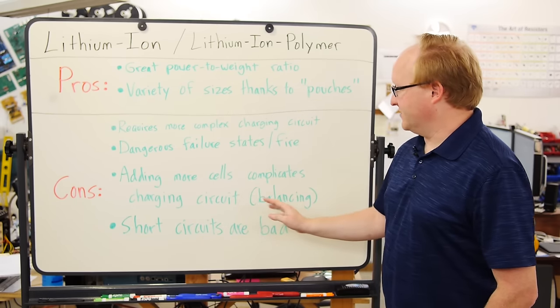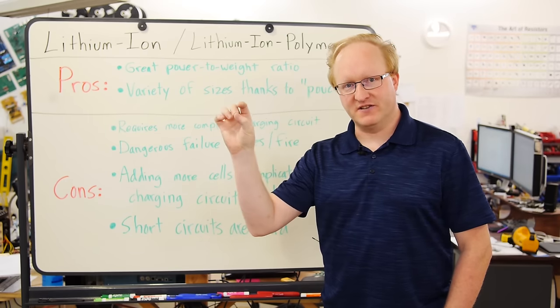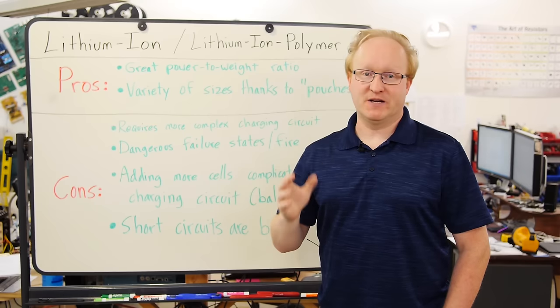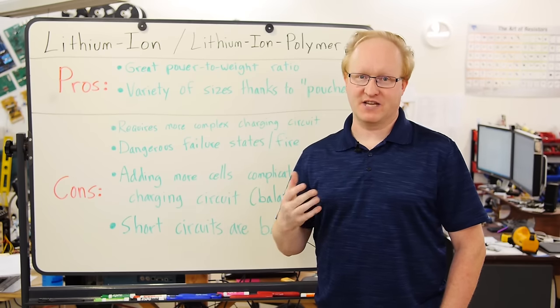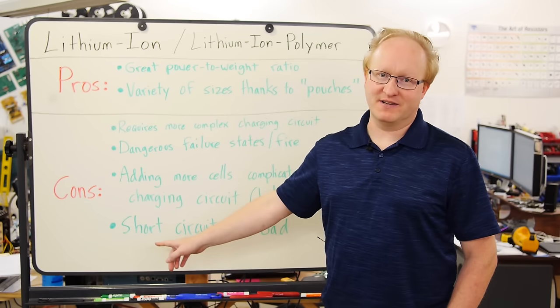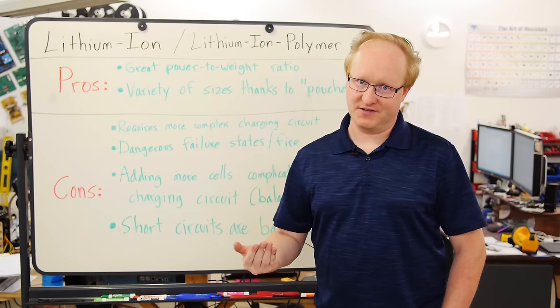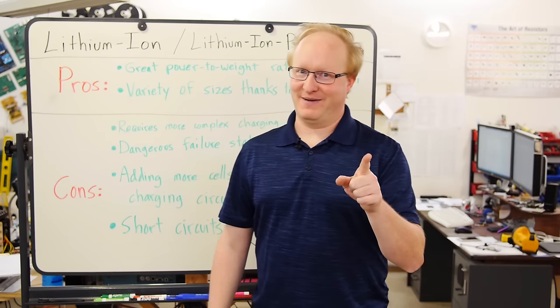Adding more cells complicates the charging circuit because you have to keep track of the voltage between each of the cells, which is called balancing, to make sure the cells are all charged at the same rate. And as I mentioned, short circuits with lithium batteries are bad because they're powerful. That also makes them more dangerous. It's very much like dynamite.